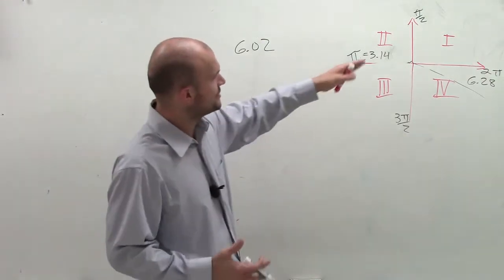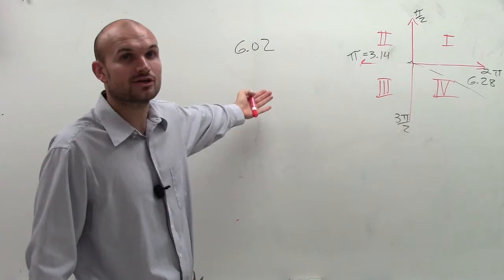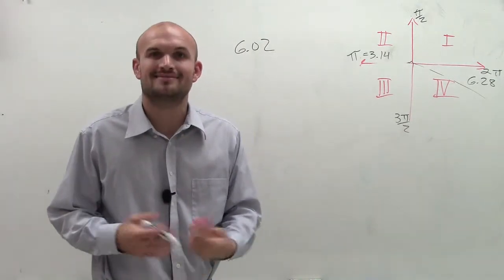So I hope that makes sense. Just make sure you know what your quadrants are. And then when you don't have an angle in terms of radian, or in terms of pi, then take it out in terms of pi, and you're all set. Thanks.